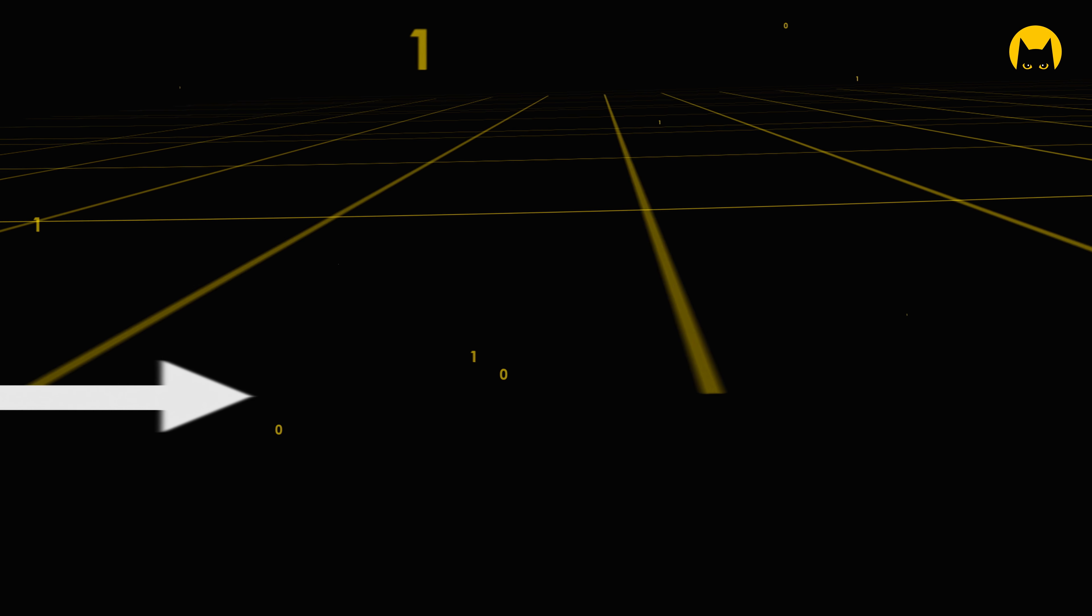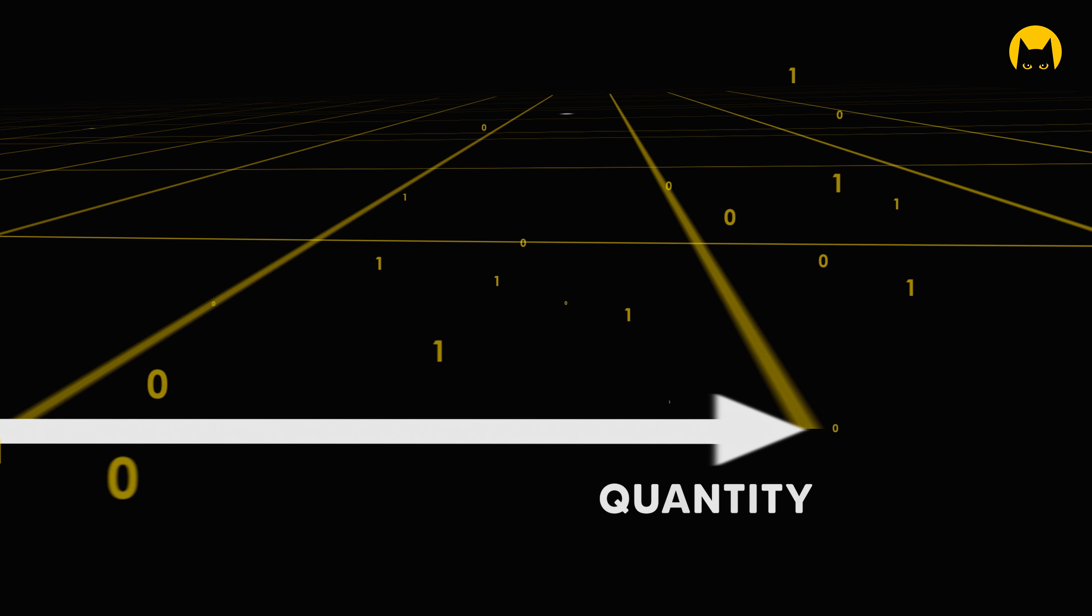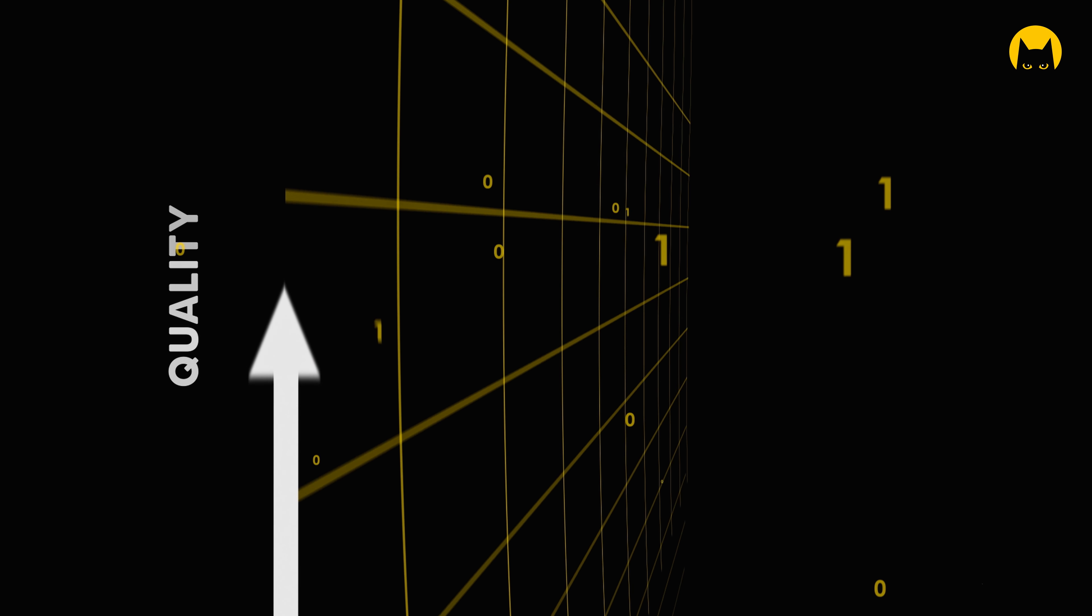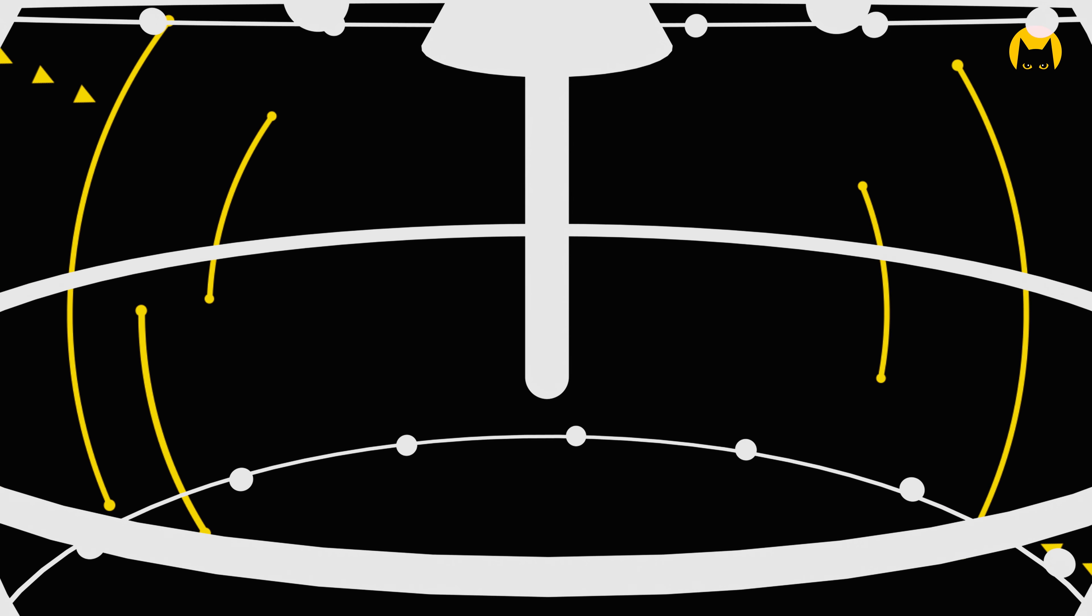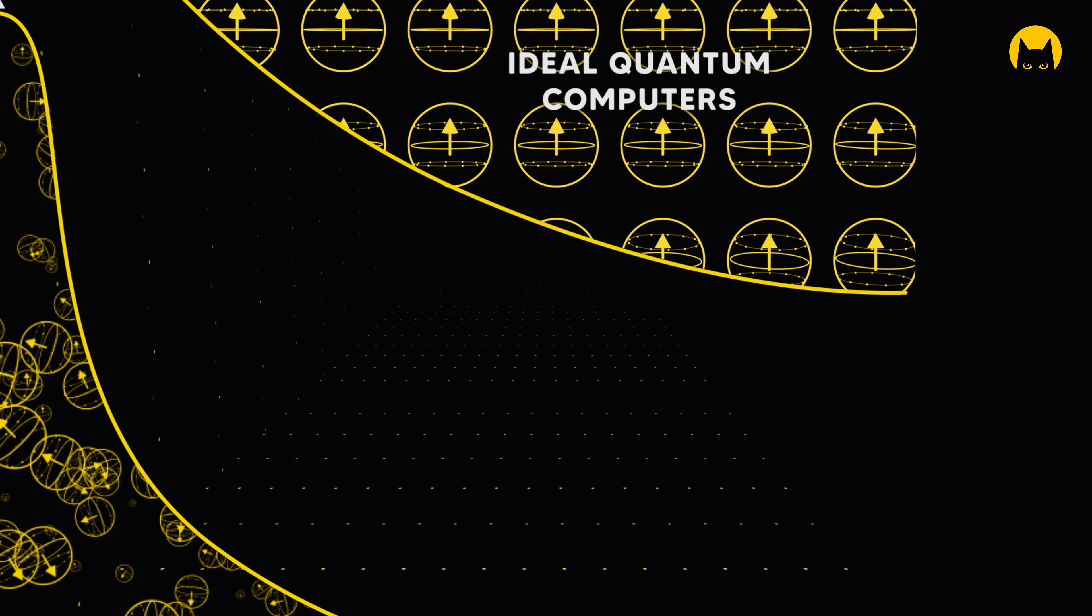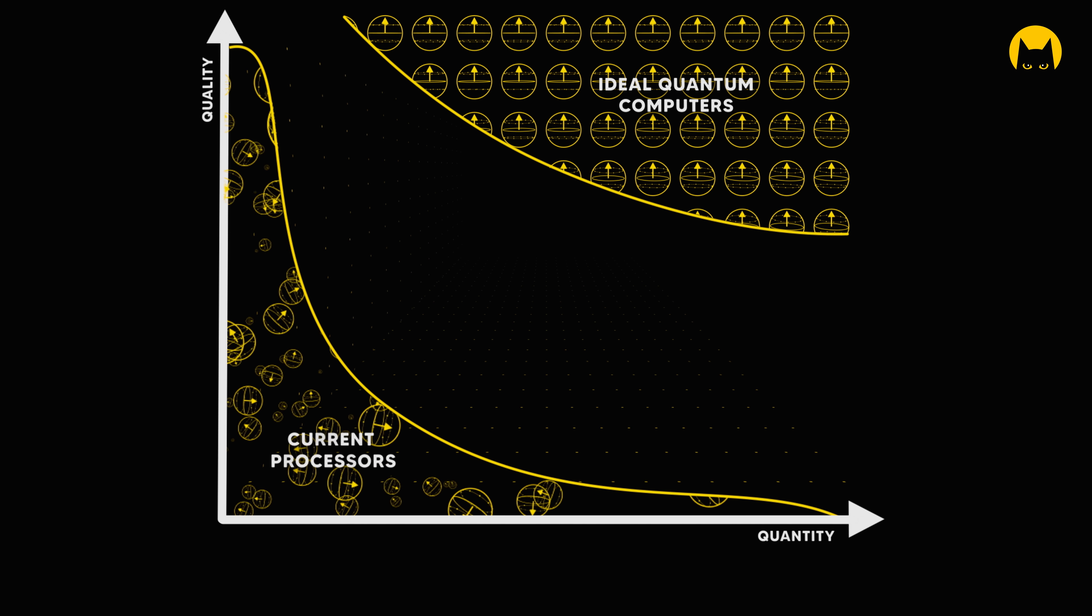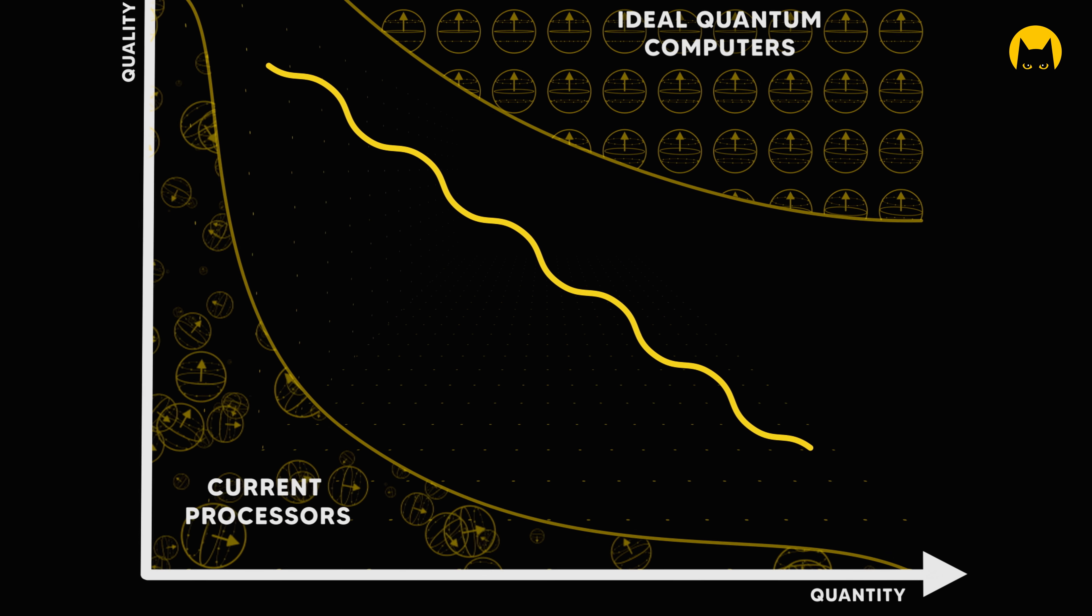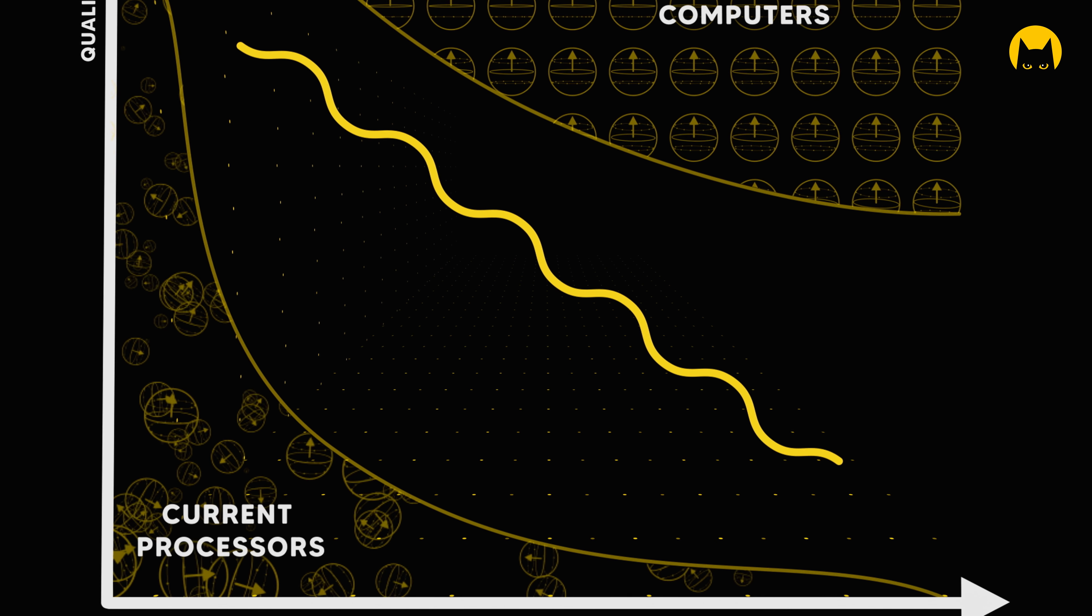Two main factors determine this power: the quantity of quantum bits or qubits, and their quality. Ideal quantum computers are machines with a large number of high-quality qubits. However, current processors have neither, and this gap constitutes a major technological challenge.